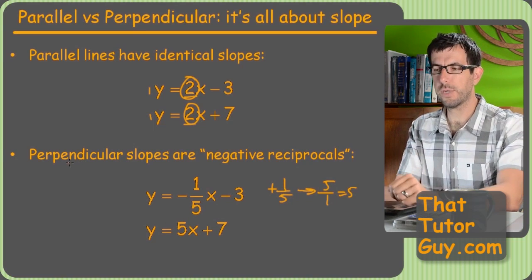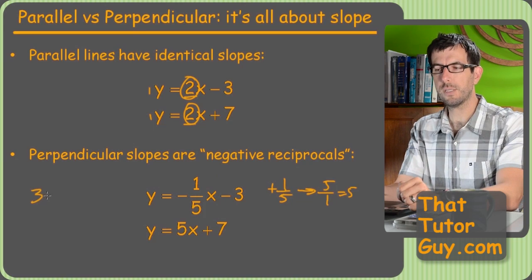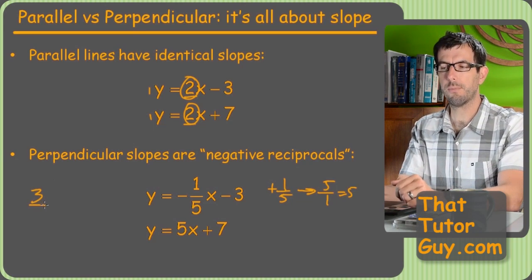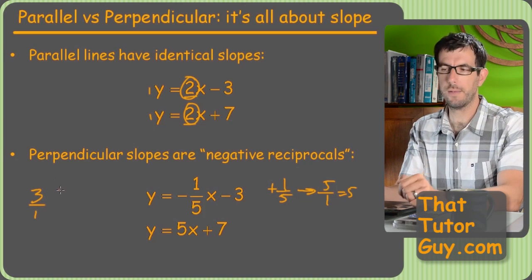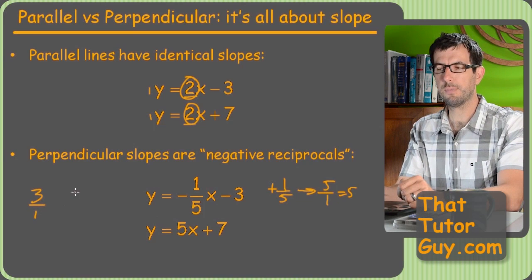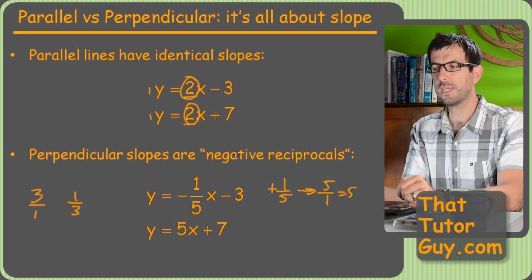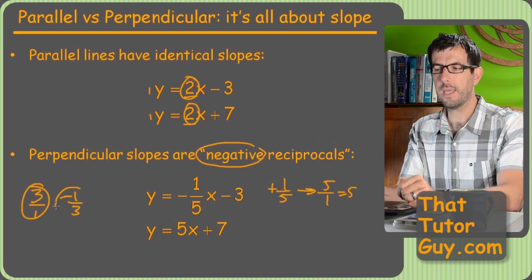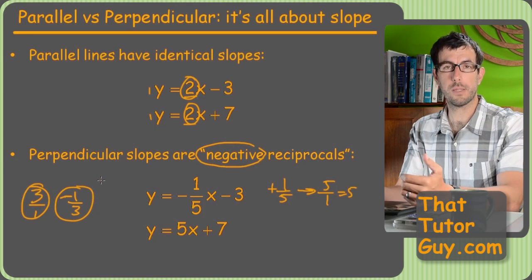Now going the other way can be a little bit trickier. You know, somebody might say, hey, what's the reciprocal of three? It's not a fraction, so how can you flip it? Well, every whole number is actually a fraction over one. So if you want to flip it, that just becomes one-third. And then of course you've got to have the negative in front of it. So three and negative one-third would be perpendicular slopes.